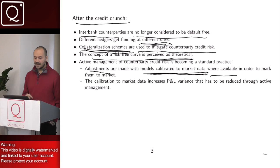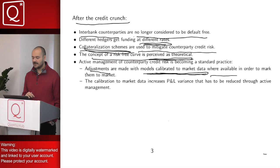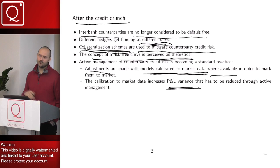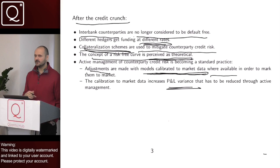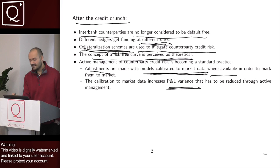Once these adjustments are calibrated to market data, the P&L variance increases. This adjustment — called CVA — if spreads widen, it is going to increase. If interest rates go up or down, or FX rates change, our exposures are also going to change, and consequently the CVA is going to change. So it adds a lot of variance to our P&L as a hedger. We are being forced — not only by regulators — to do some sort of active management of our counterparty credit risk.